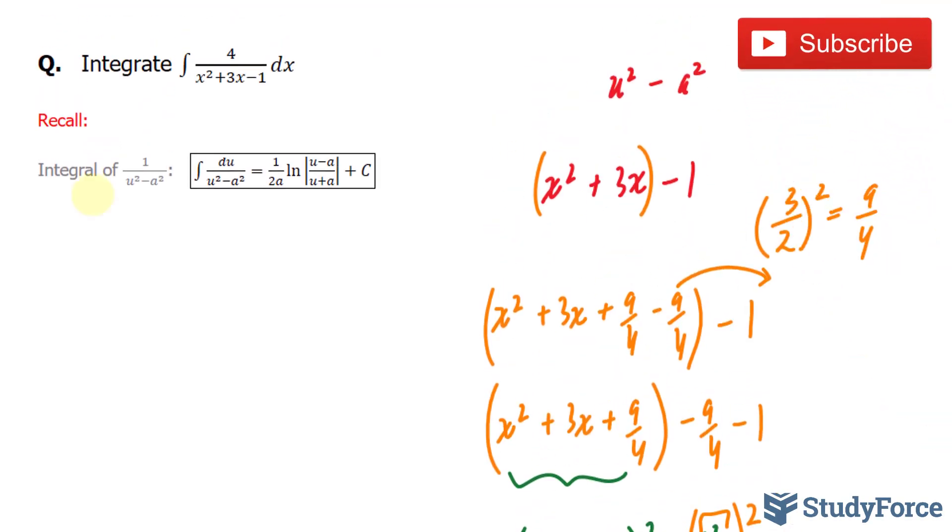And because of that, we can use the following integration rule. Where if we have 1 over u squared minus a squared, we can break it down into 1 over 2a times ln absolute of u minus a over u plus a plus c. Let's go ahead and do that.